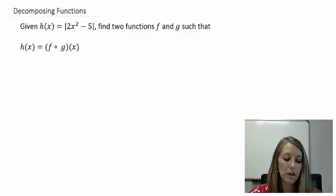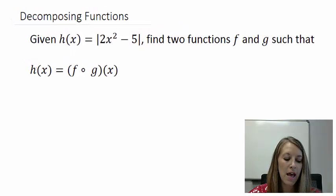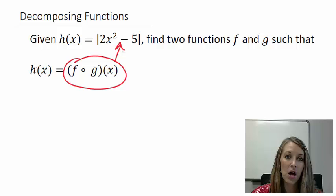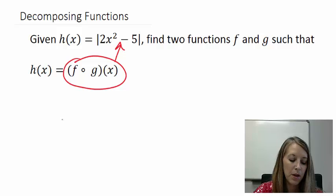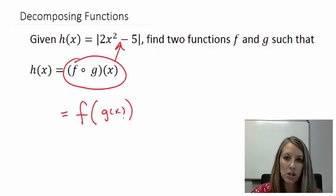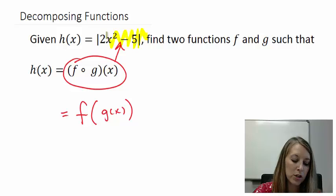So they give us a function here, h of x is the absolute value of 2x squared minus 5, and we want to figure out two separate functions where if we were to compose these two functions, it would end up as our function defined there. So we want f of g of x such that if we defined g of x in such a way and we define f of x in such a way, we would end up with this expression up here.